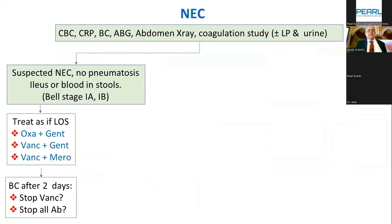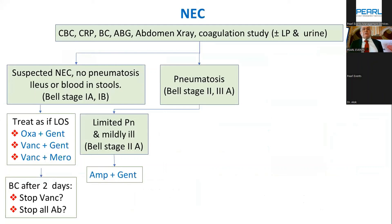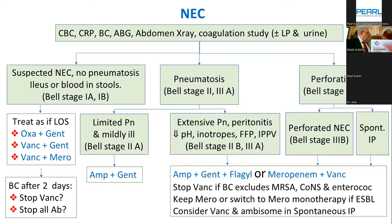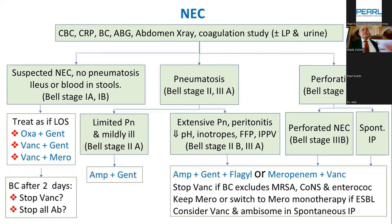For necrotizing enterocolitis: Bell stage 1, which may be NEC or late onset sepsis, I treat as late onset sepsis only. For stage 1A or 1B with no pneumatosis, treat like late onset sepsis. With limited pneumatosis, no need for metronidazole — studies support this. If there is perforation, you need anti-anaerobic coverage: the choice is ampicillin-gentamicin-metronidazole, although this doesn't cover ESBL, or meropenem plus one agent, then follow the antibiogram. Consider antifungal in spontaneous perforation as there is a high rate of fungal infection in that setting.